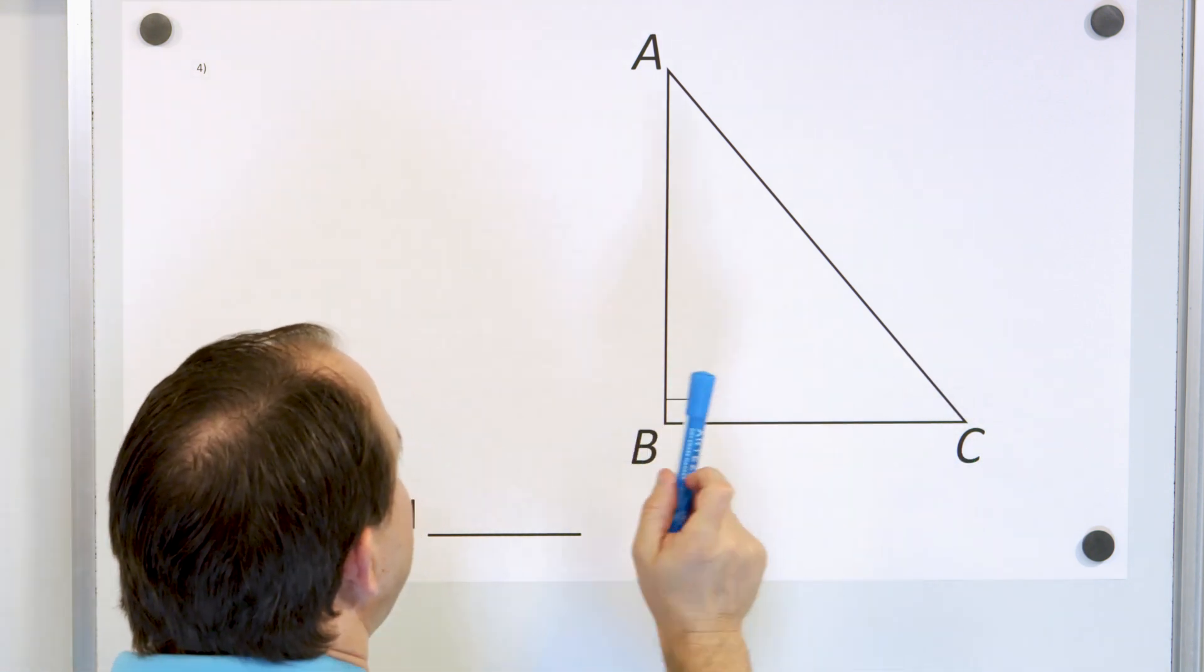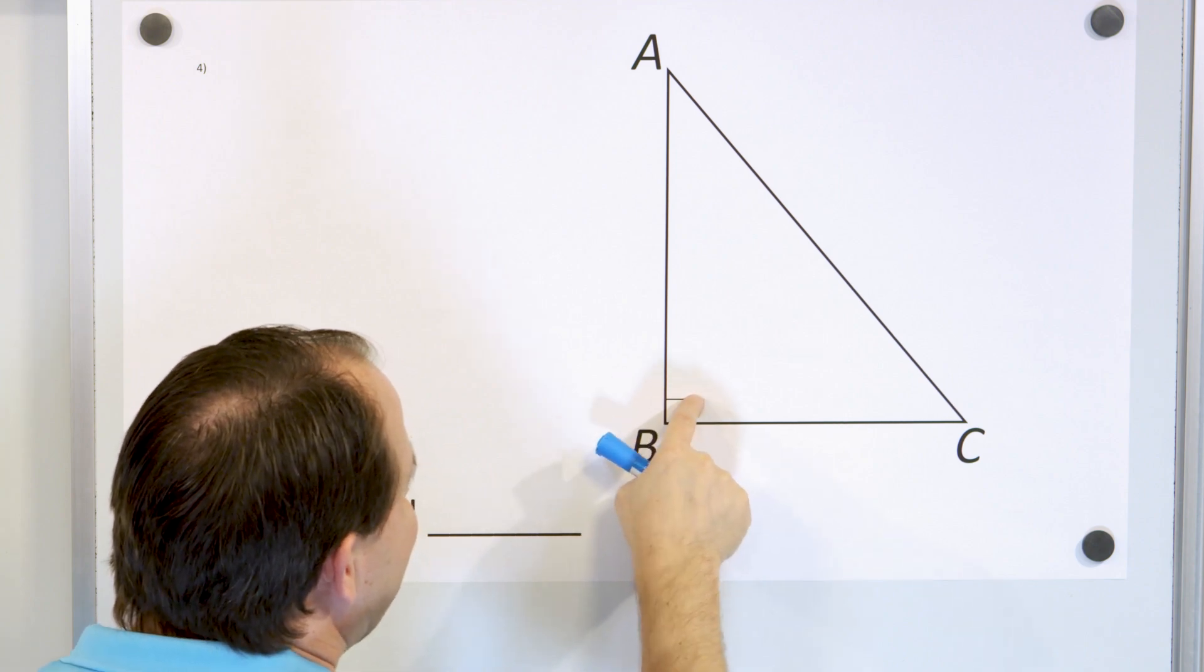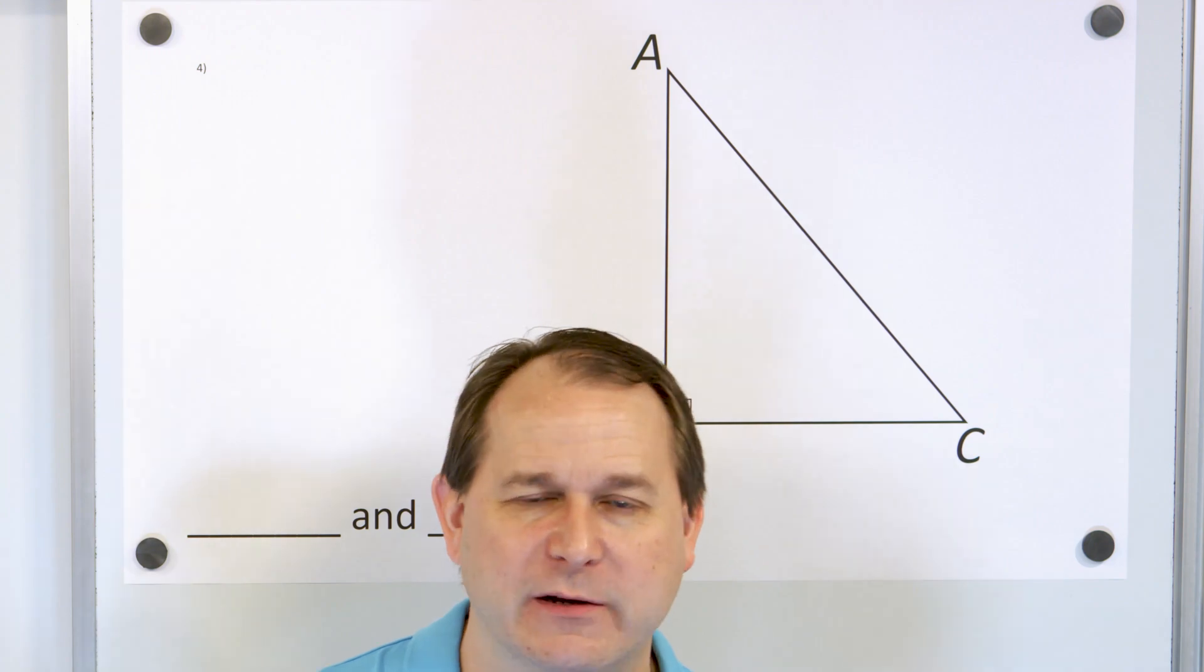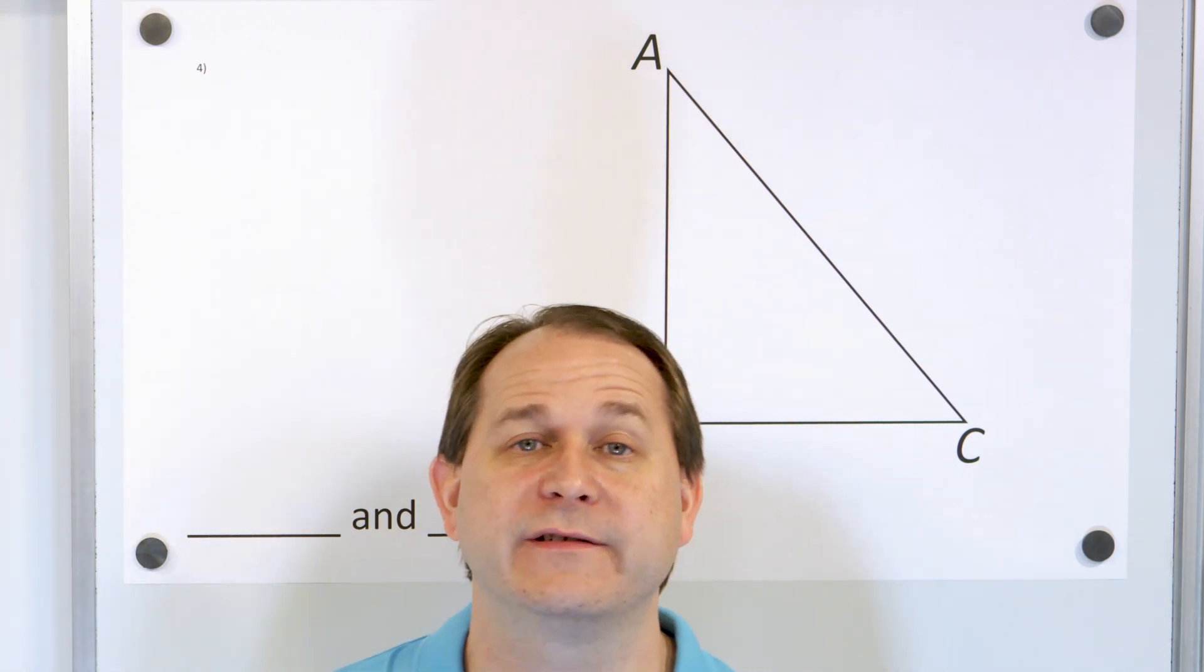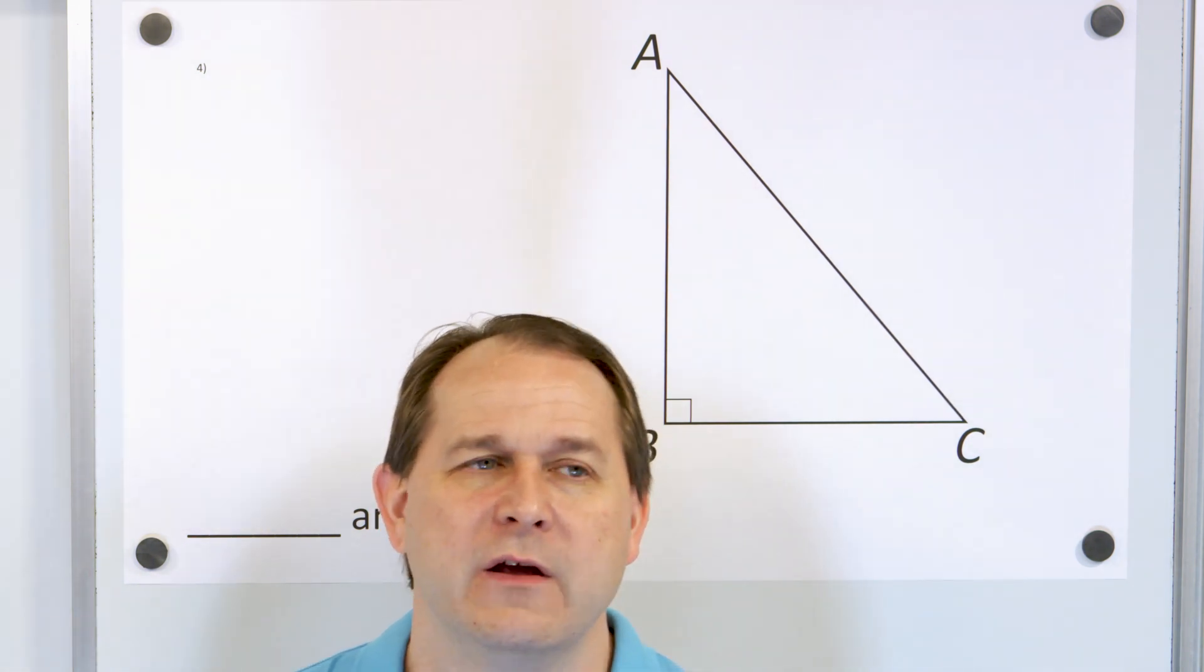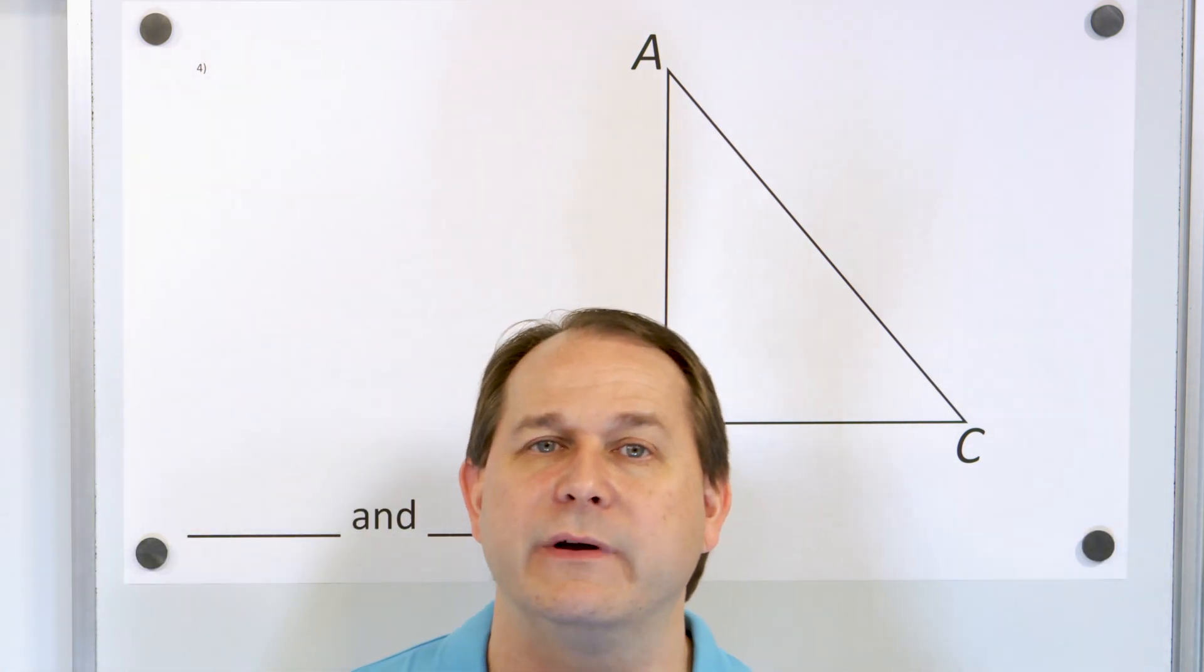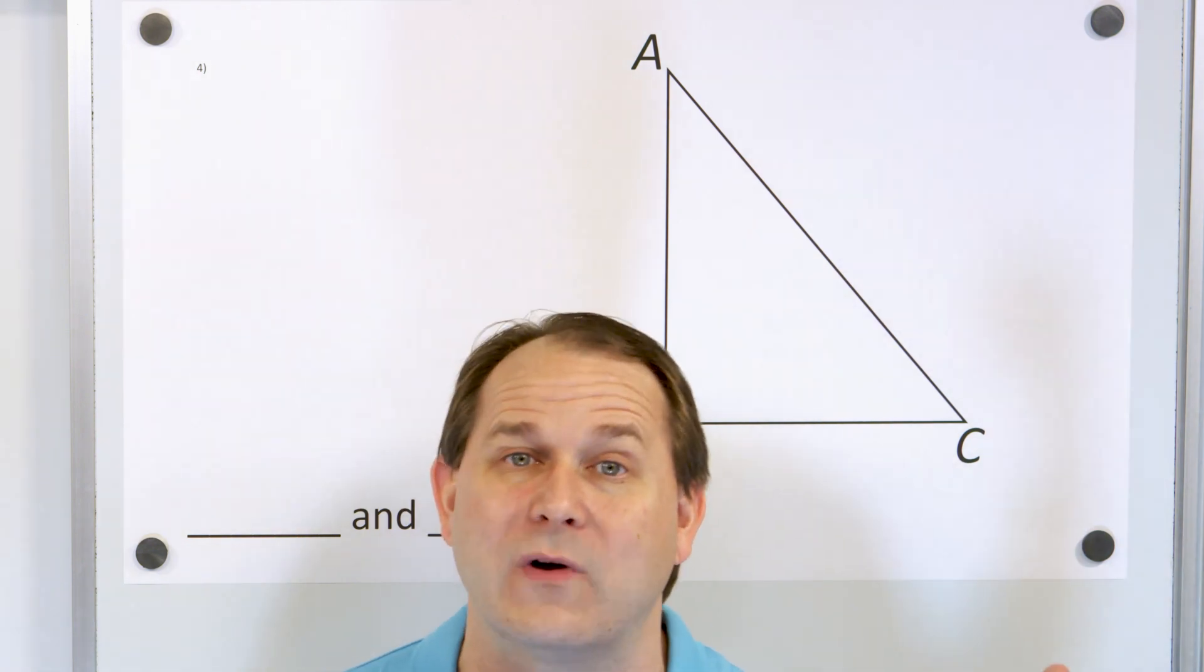Problem number four, we have a triangle and notice in this triangle, one of the angles actually has the square in the corner. So this angle is what we call a right angle. It's a 90 degree angle. So because of that, this triangle is called a right triangle. If one of the angles inside that triangle is 90 degree right angle, it's called a right triangle.